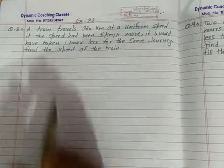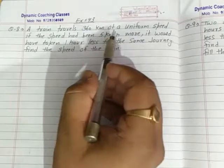Hello everyone, see now question number 8. Question number 8, what are you saying? A train travels 360 km at a uniform speed.